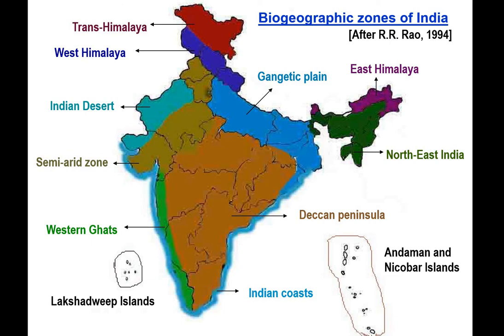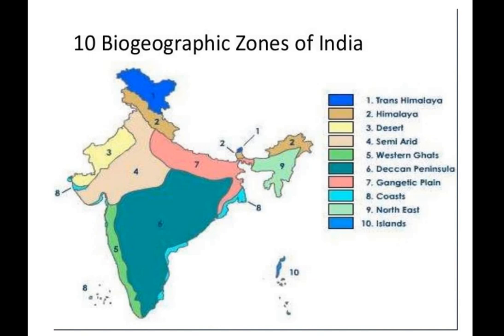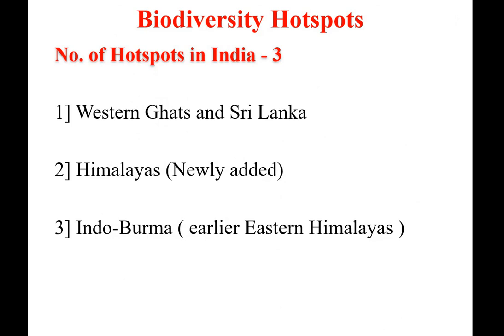The biogeographic zones of India include: Andaman and Nicobar Islands, Trans-Himalaya, West Himalaya, Indian deserts, semi-arid zone, Western Ghats, Gangetic plains, East Himalaya, Northeast India, and Deccan Peninsula. These 10 zones are also shown in the diagram: Trans-Himalaya (1st), Himalaya (2nd), Desert (3rd), Semi-arid (4th), Western Ghats (5th), Deccan Peninsula (6th), Gangetic Plains (7th), Coast (8th), Northeast Himalaya (9th), and Andaman and Nicobar Islands (10th).